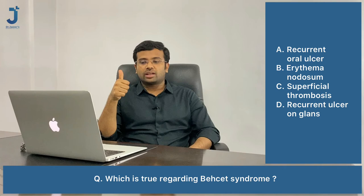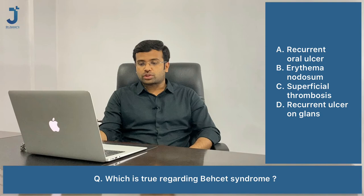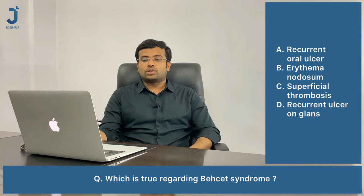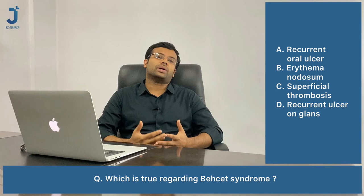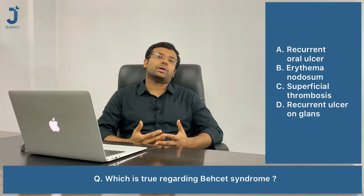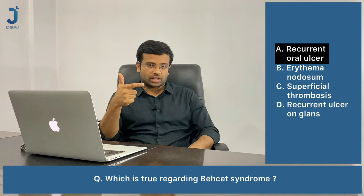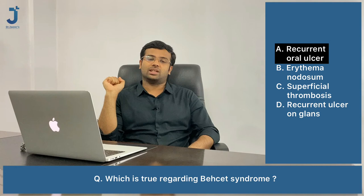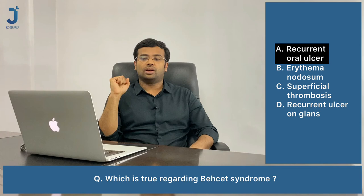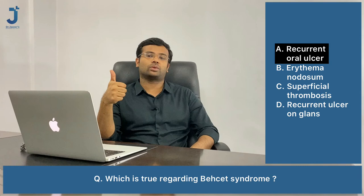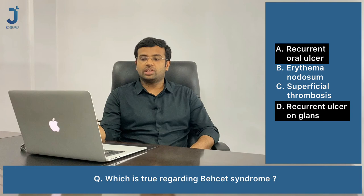Next question: which is true regarding Behçet syndrome? Options are recurrent oral ulcer, erythema nodosum, superficial thrombosis, and recurrent ulcer on the genitalia. In Behçet syndrome the major criteria include recurrent oral ulcers, uveitis, and recurrent genital ulcers. The pathergy test may also be positive. So recurrent oral ulcer and recurrent ulcer on the genitalia are both seen in Behçet syndrome.